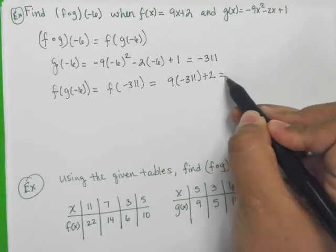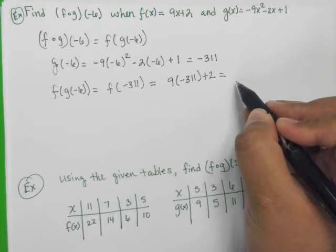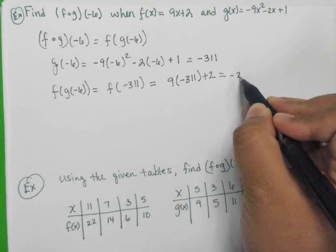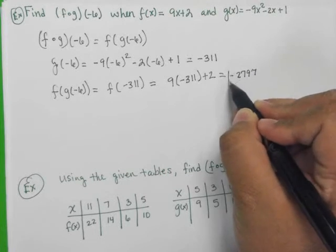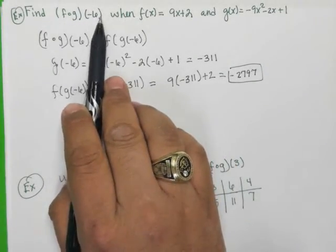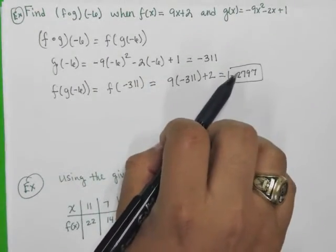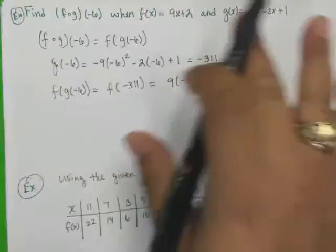Okay. So go ahead and perform this operation, and then you should get something along the lines of negative 2,797. So this right here is what F composed of G of negative 6 is. That's this answer right here. All right. Now, we've done the algebra part.